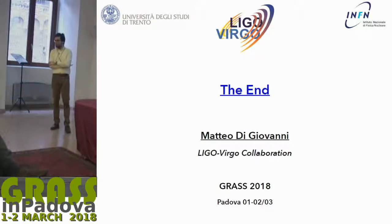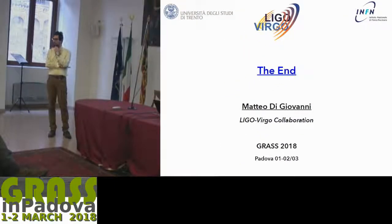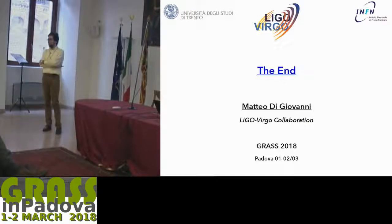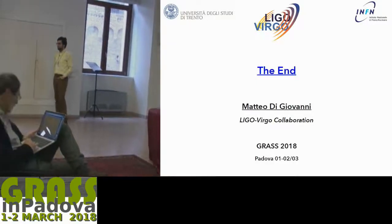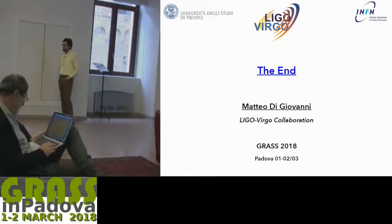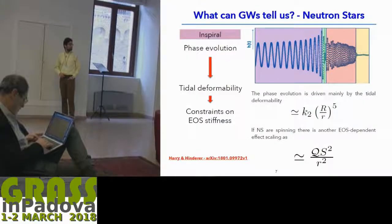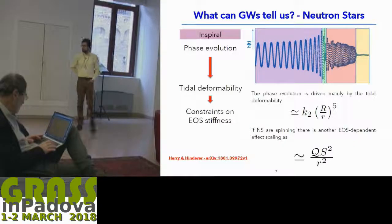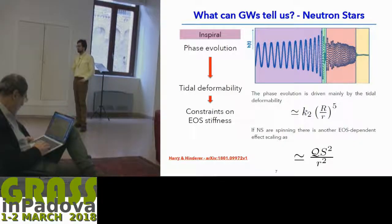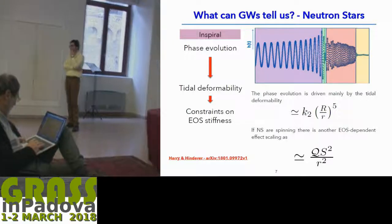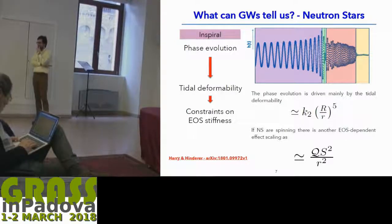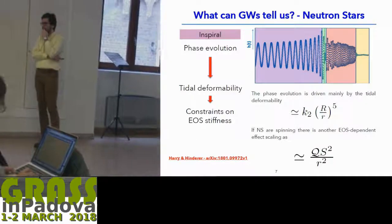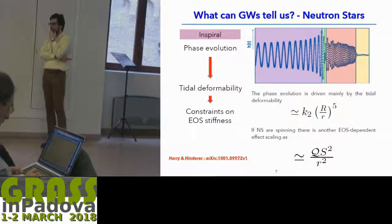A comment from the audience: the quadrupole monopole term mentioned is not correct to say dominates at shorter orbital separation, because it actually depends on the coefficients in front of it and the spin. What has been shown is that it is not a dominant effect — the tidal k2 effect is much stronger. However, it is important to model it, and people are working on that.